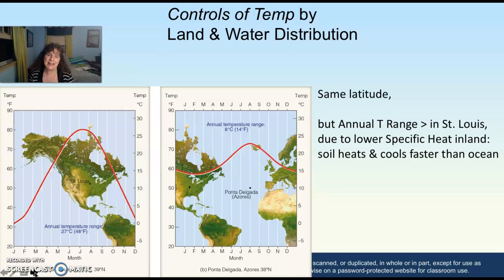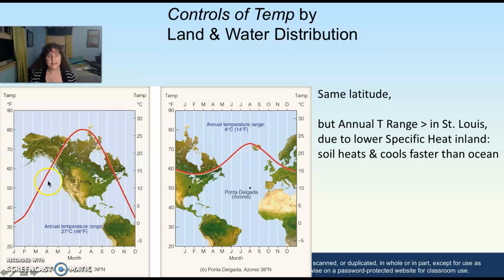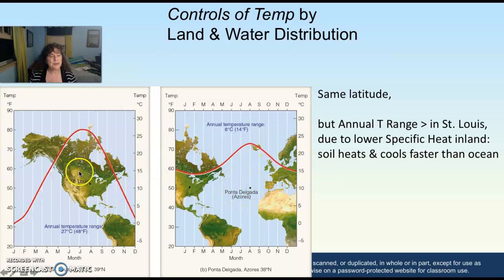Another control of temperature is land and water distribution. Temperatures in the nineties and hundreds occur in desert areas — places that don't have a lot of water around them. A city in the middle of America not surrounded by water has a high annual temperature range, while an island chain like the Azores at the same latitude has a much lower high temperature in July. Water has a higher specific heat — it takes longer to heat and longer to emit — so it warms more slowly, resulting in lower summer temperatures and moderate winter temperatures.